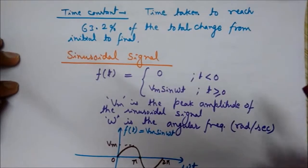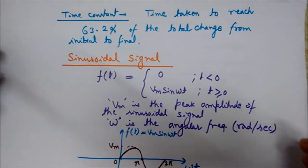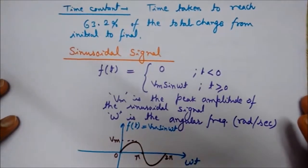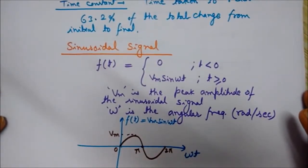Here Vm is the peak amplitude or the maximum value of the sinusoidal signal, and ω is the angular frequency with units of radians per second.